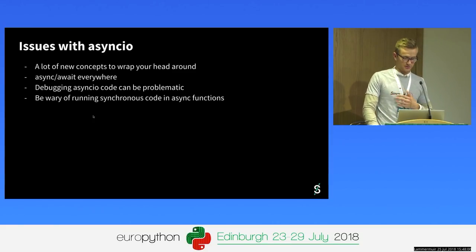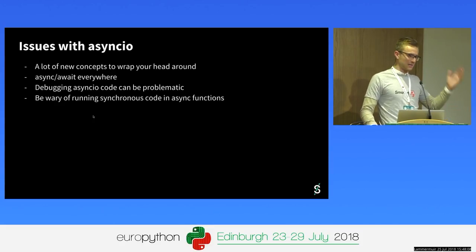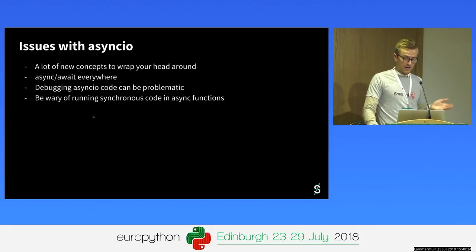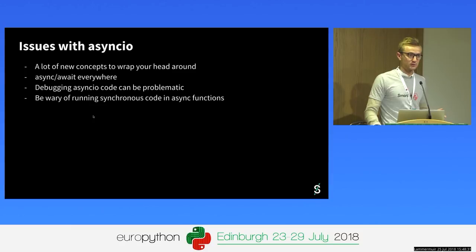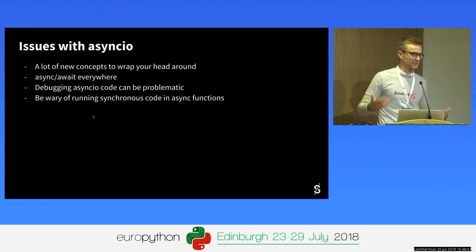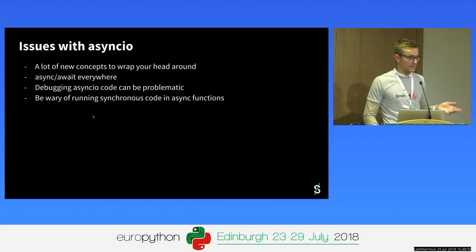An issue that definitely hit me personally was that sometimes the async.io stack would swallow my exceptions and I had no idea what was going on. But this is getting better every day — it's something Yuri, one of the Python core committers around async.io, spoke about earlier. Also, accidentally running synchronous I/O-waiting code inside your asynchronous functions is another source of issues. The simple fix is to monitor the event loop: just figure out which tasks take longer than X milliseconds, which may indicate blocking I/O inside async functions.